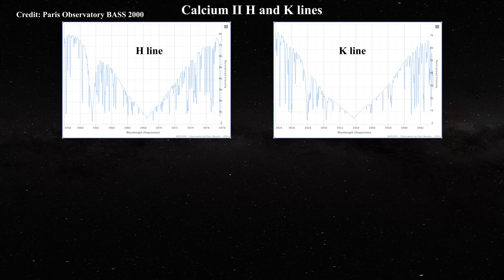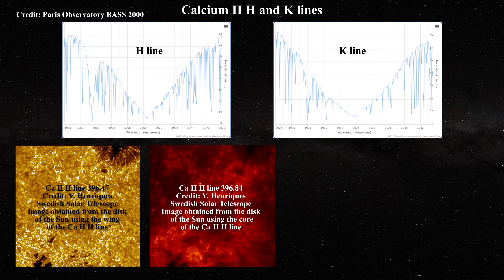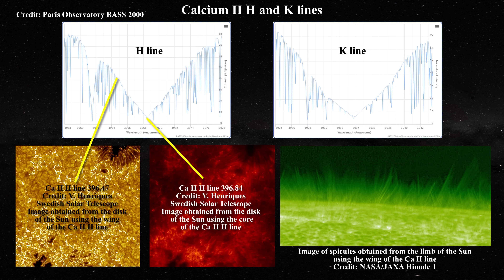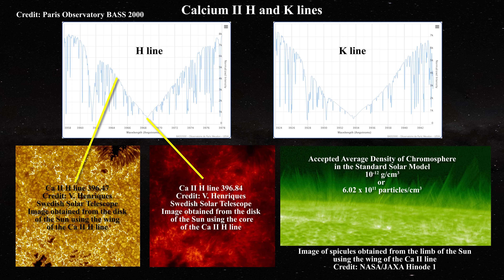Here for instance are the well-known Fraunhofer calcium H and K lines. Imaging the chromosphere using these lines, either at the core or in the wings, serves to highlight that this region of the Sun is filled with structure. The presence of structure directly refutes the accepted average density of the chromosphere in the standard model, which is only 10 to the minus 12 grams per centimeter cubed, corresponding to 6.02 times 10 to the 11th particles per centimeter cubed.